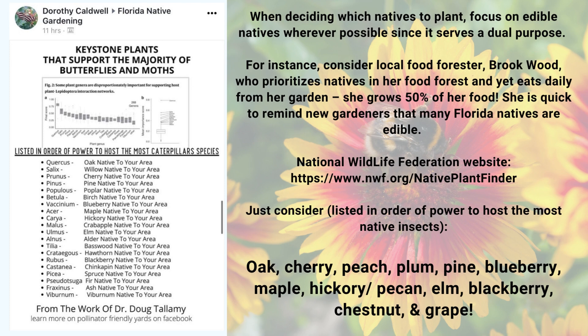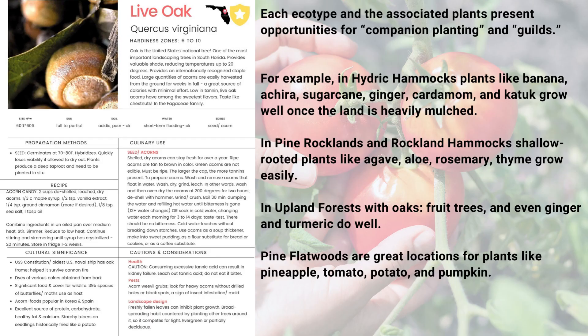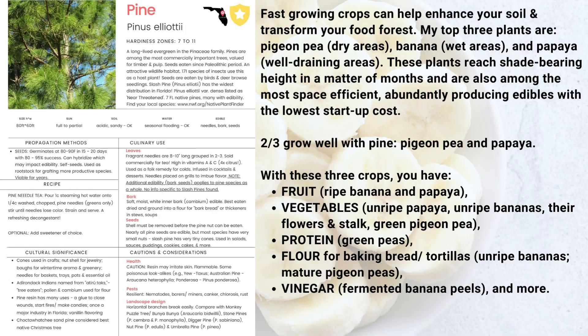Doug Tallamy lists in his book which plants have the greatest power to host native insects, and there are many that are edible. Oak, for example, has been a staple across the world and is still a very popular carb source in Korea. You can plant things around the oaks like ginger, cardamom, and katuk. You can also plant things around pine like pigeon pea — my pigeon pea loves pine — as well as pineapple and papaya, since it's high and dry right at the base of the pine. You can start to create these companion plantings.